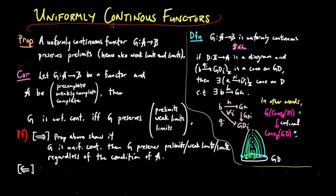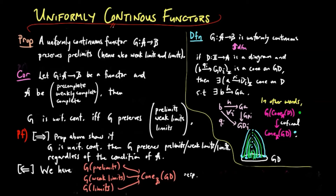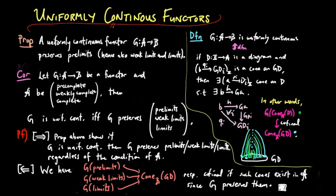Conversely, pre-limits, weak limits, and limits are sub-collections of cones on D, and taking G on these collections of cones to cones on GD, we see that they each are respectively co-final by their factorization properties, provided such pre-limiting cones, respectively weak limiting cones, respectively limiting cones, exist in A, and G preserves them. And that completes the corollary.